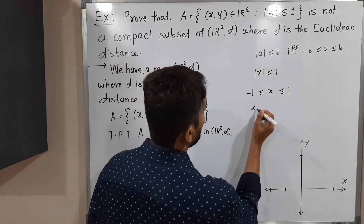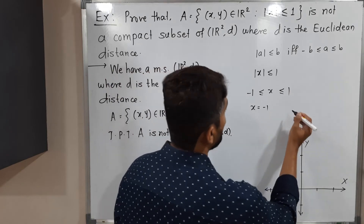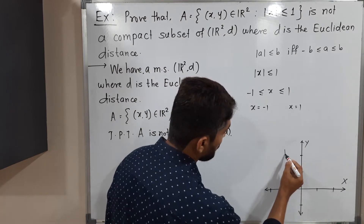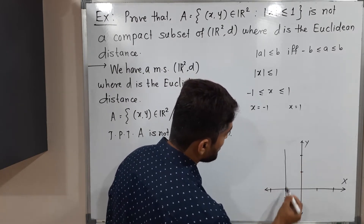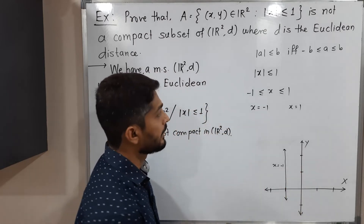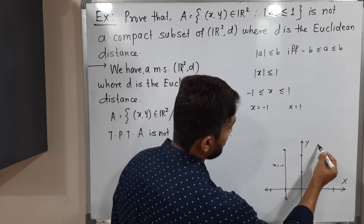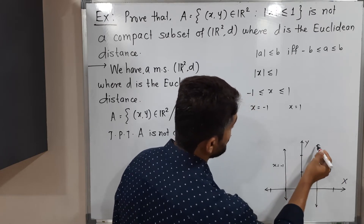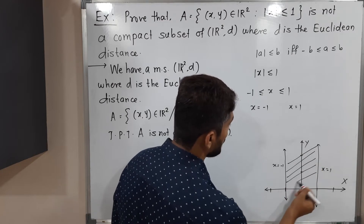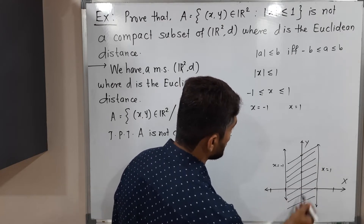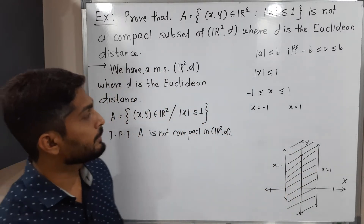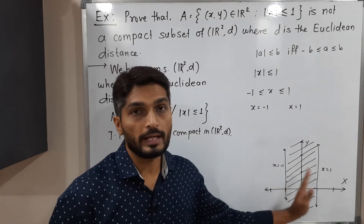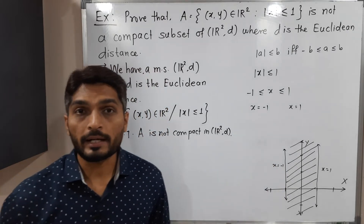To find the boundary curve, we replace inequality with equality: x = -1 is a straight line parallel to the y-axis passing through x = -1, and x = 1 is a line parallel to the y-axis passing through x = 1. Set A consists of all points between these two lines, i.e., the vertical strip where x lies between -1 and 1.